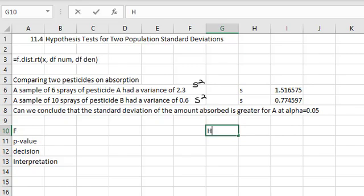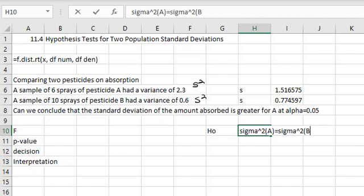So, let's set up our null hypothesis. The null hypothesis is that sigma squared, the variance of group 1, or A, because that's the largest one we put it first, is equal to sigma squared of group B.